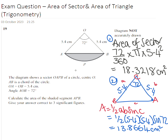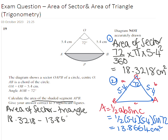On the final step, to calculate the area of the shaded segment, I need to find the difference. This is going to be the area of the sector minus the triangle. We're going to have 18.3218 minus 13.8664.